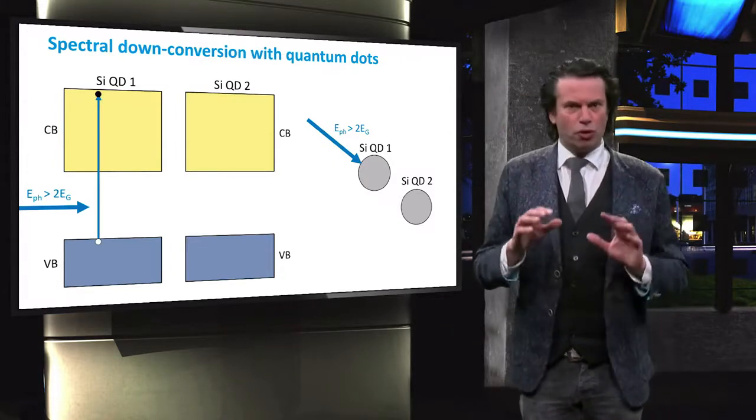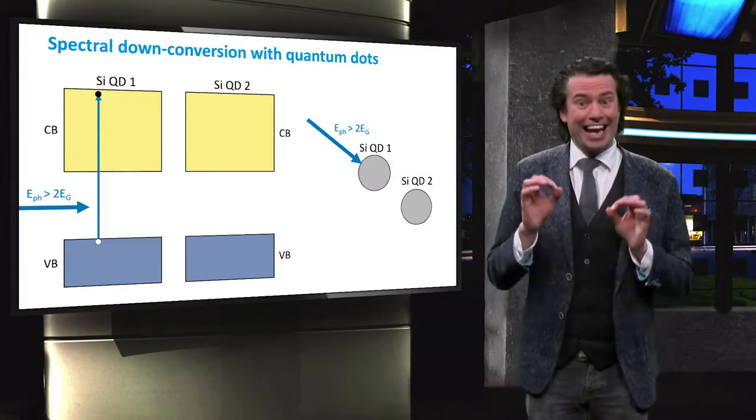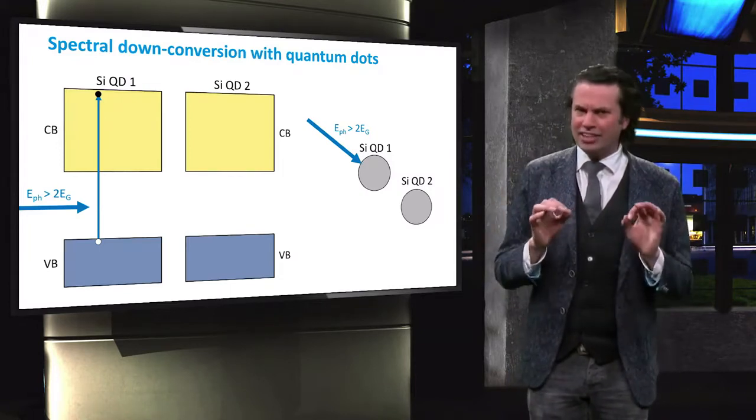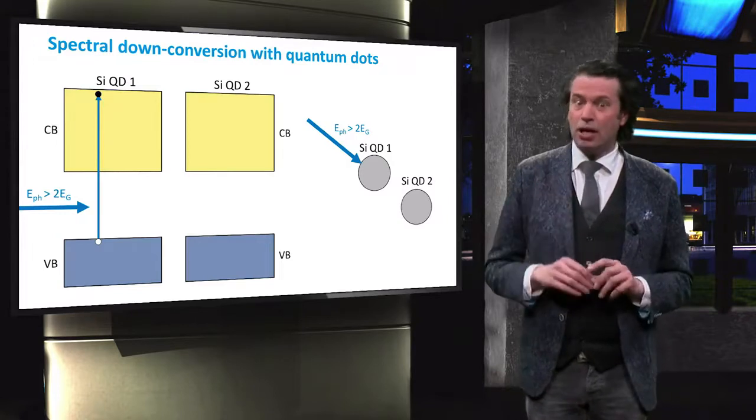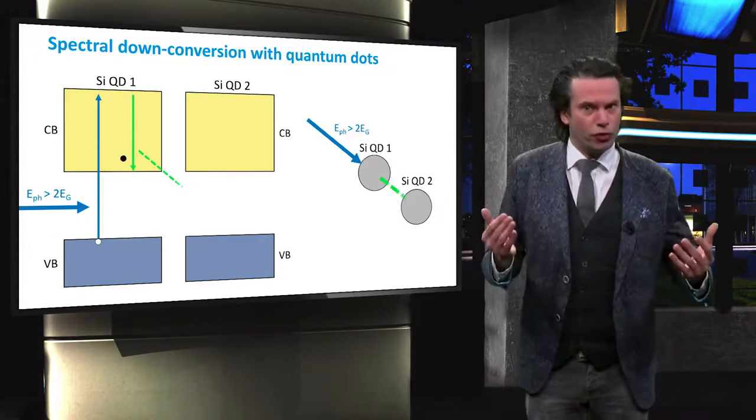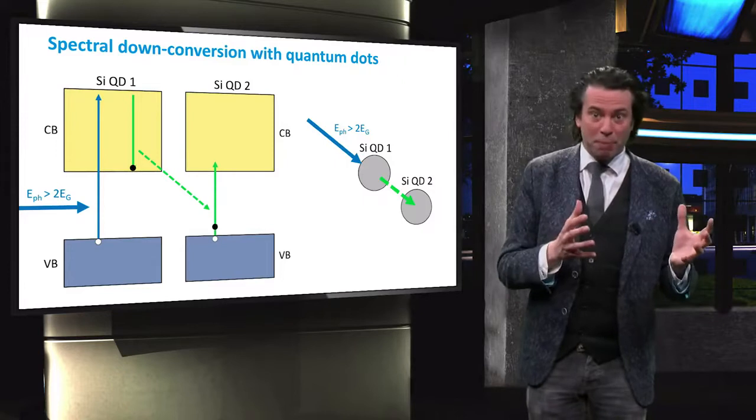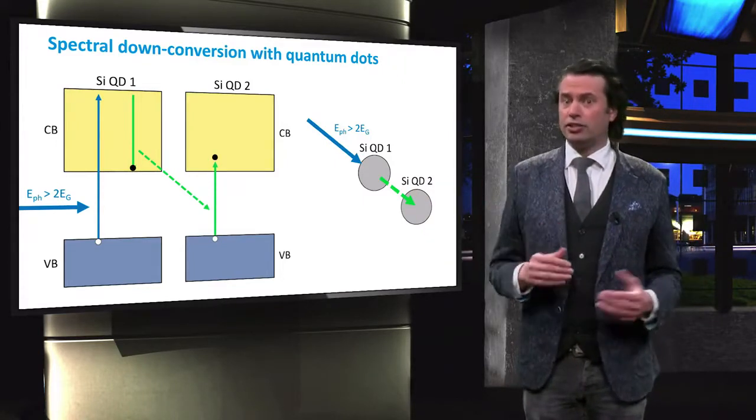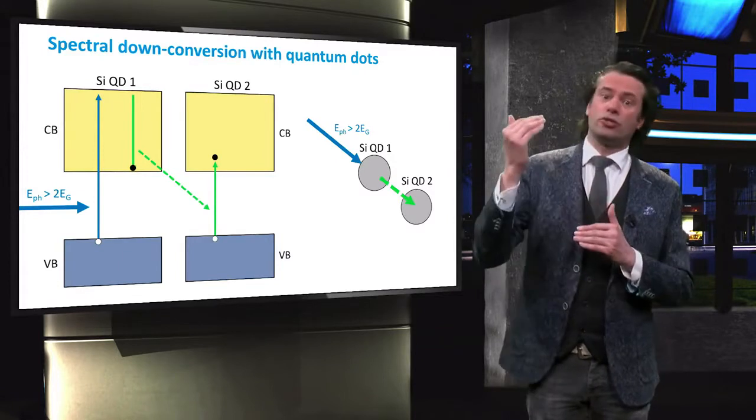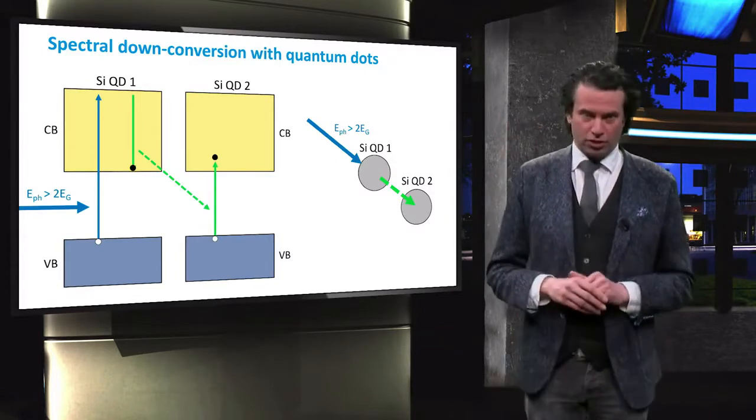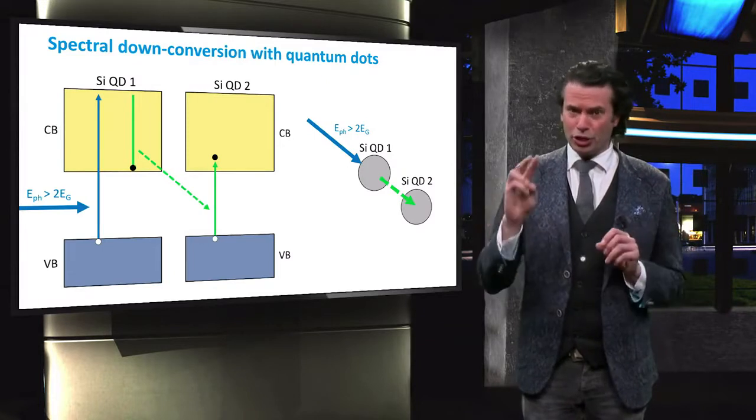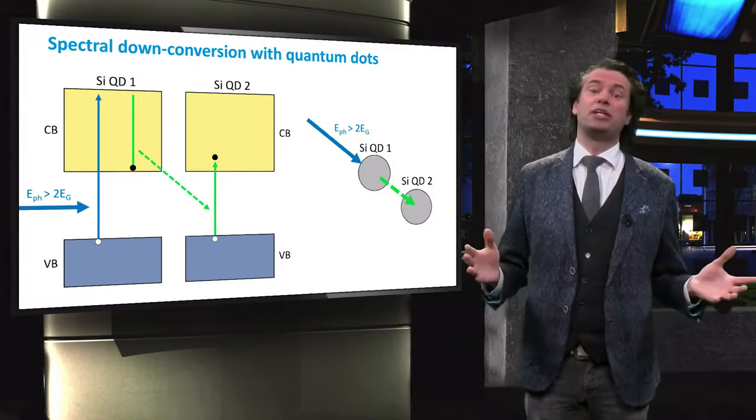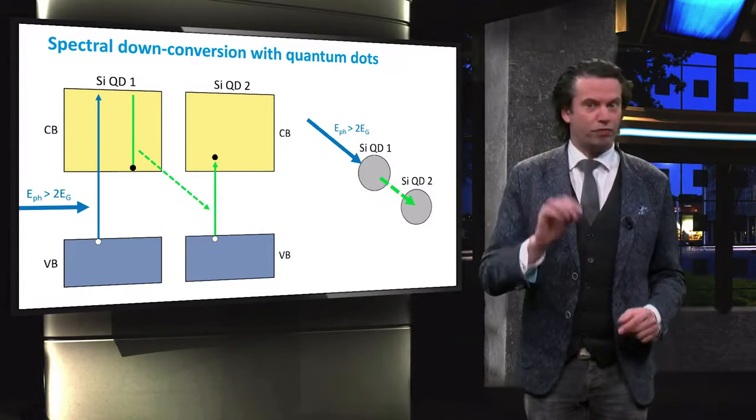In contrast to a bulk semiconductor, the excess energy of the photon is not necessarily lost as heat, but can be transferred as a quantized energy package to a neighboring quantum dot. Here a second electron is excited into the conduction band of the second dot. As a result, two electron hole pairs have been created out of one photon.